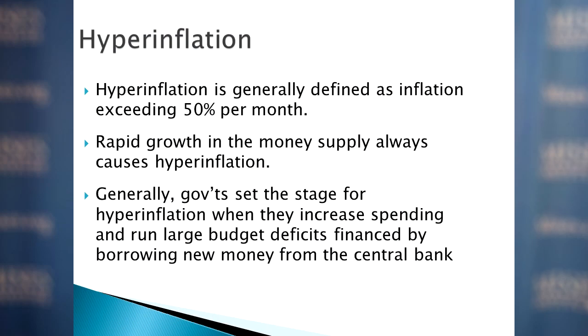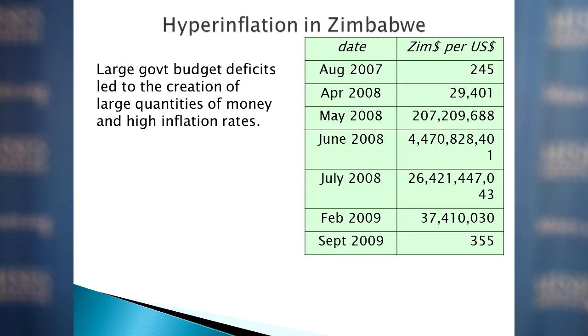Hyperinflation is generally defined as inflation exceeding 50% per month — that is, prices doubling or more than doubling every two months. Rapid growth in the money supply always causes hyperinflation. Generally, the government sets the stage by spending much more than it takes in tax revenues and then financing that extra spending by borrowing new money from the central banks. Very recently, we had a huge inflation in Zimbabwe, where there were large government deficits and they borrowed money from banks who created it.